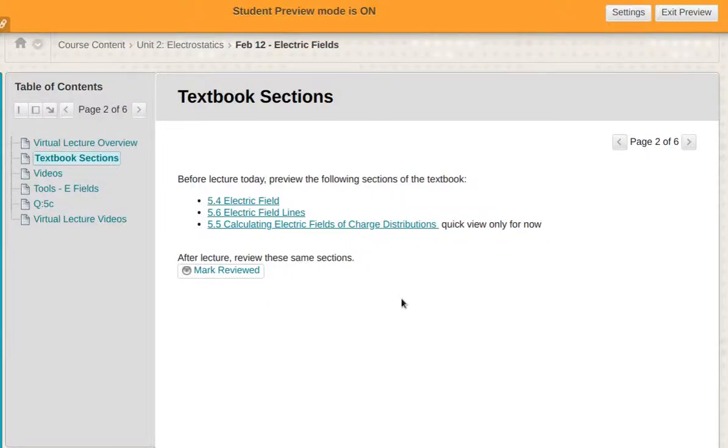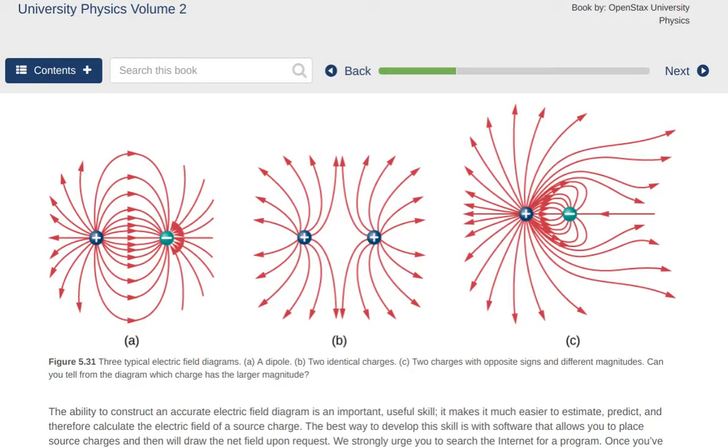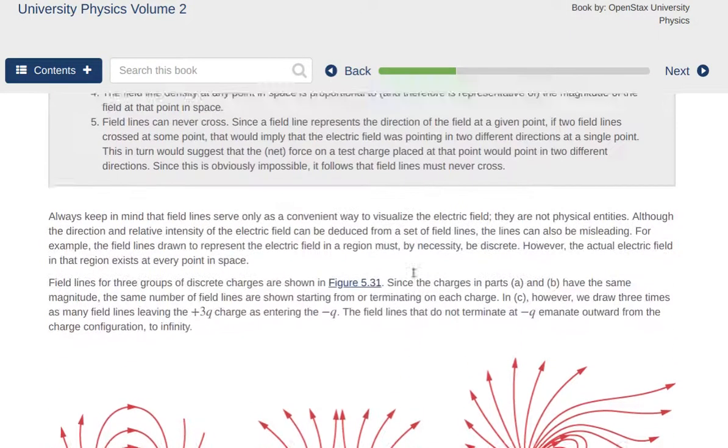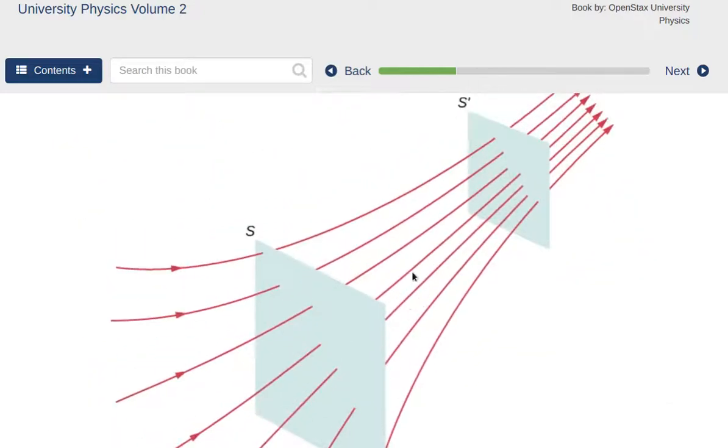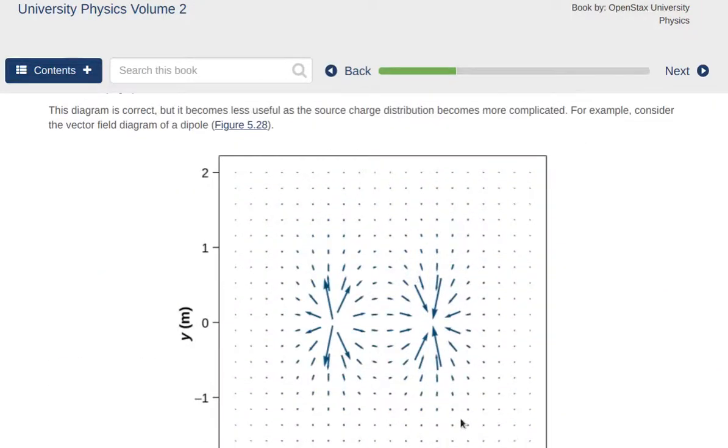Before we get into solving the worksheet, I want to go over something that I would have talked a little bit more about in class. When we've got these electric field lines and you look at something like the link to the textbook, we see all sorts of little diagrams showing arrows for electric field lines or maybe showing these sort of flat images where we've got vector fields. But it's a little bit hard to see what's going on here.